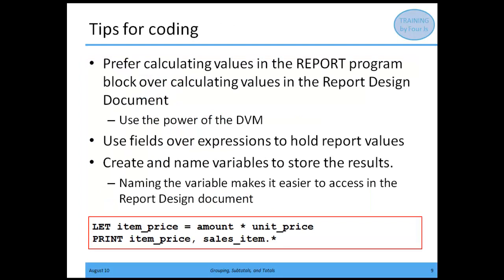Some coding tips: when writing your 4GL report application, we prefer that you calculate the values inside the report program block, instead of sending the data stream across and calculating values in the report design document. Theoretically I could take price times quantity in my report design document, but it's better to use the power of the DVM to calculate values in your report application prior to sending data across. We also recommend using fields over expressions to hold report values, and creating named variables to store results. Naming the variables makes it much easier to access them in the report design document — for example, let item_price equal amount times unit_price — so that when you send across the print statement, the clearly named variable is easy to select from the data view once you import your RDD.